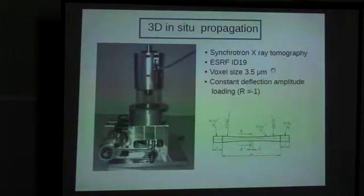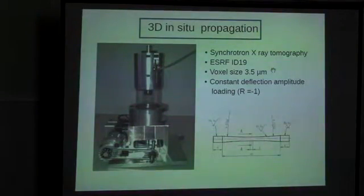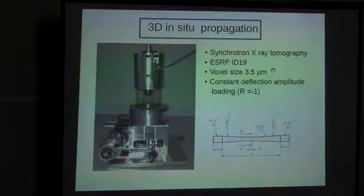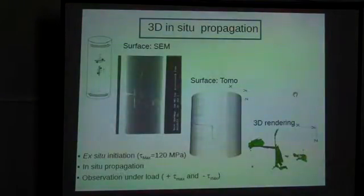This is not a very small voxel size — they routinely achieve 0.5 or 0.7 microns, which would give better crack visibility — but this comes at the expense of sample diameter. Here we wanted a sample of 3 mm diameter, so we had to work with this 2.5 micron voxel size. We worked with a constant angle of deflection throughout the test, and it's a fully reversed test with a ratio of minus 1.